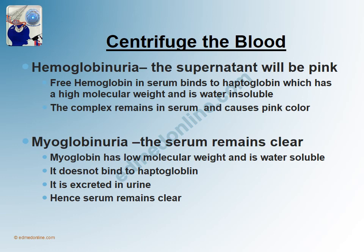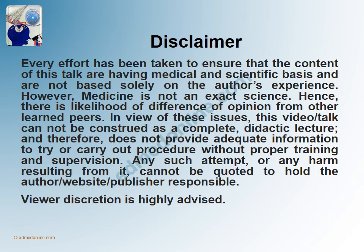With myoglobinuria, the serum remains clear. Myoglobin has a low molecular weight and is water soluble; it does not bind to haptoglobulin and is excreted in urine, hence the serum remains clear. So in summary: if the dipstick test is positive, do a urine microscopy — if RBCs are seen, it is hematuria; if RBCs are absent, centrifuge the blood — if the serum shows pink discoloration it is hemoglobinuria, and if the serum remains clear it is myoglobinuria. Thanks a lot friends.